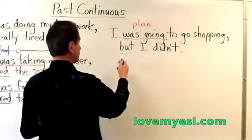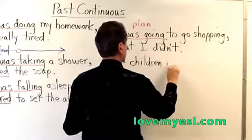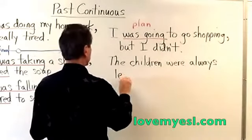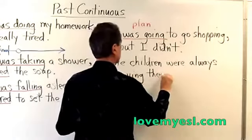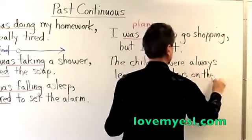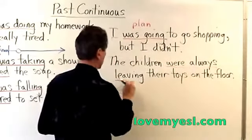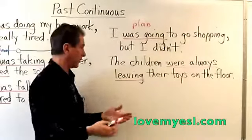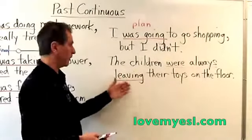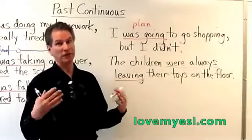The second use is with the word 'always.' The children were always leaving their toys on the floor. 'Were' is the first part of the past continuous — 'were always leaving' is my past continuous — because they did it again and again and again. I always had to tell them, 'Put your toys away, put them back in the toy box,' but they left their toys on the floor all the time. So you can use the past continuous with the word 'always,' and it means they always did that thing.